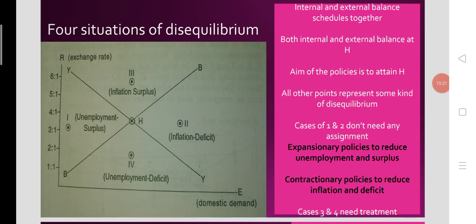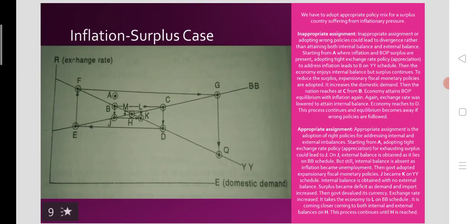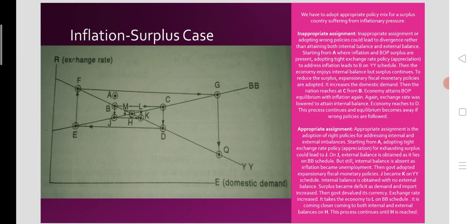What policy would be suggested by Trevor Swan? Swan's model is about assigning appropriate policies to attain point H — where both the internal balance schedule YY and the external balance schedule BB intersect. At that point H, both internal balance and external balance are achieved simultaneously. This is the central question of the assignment problem.